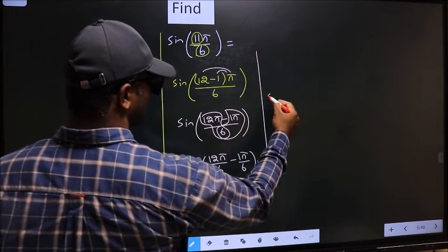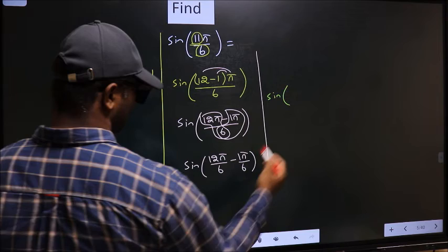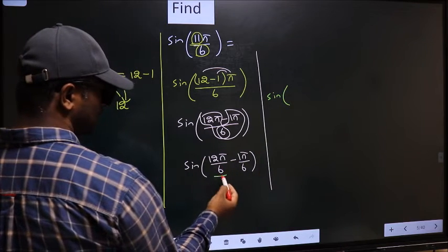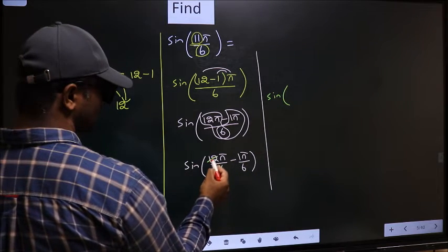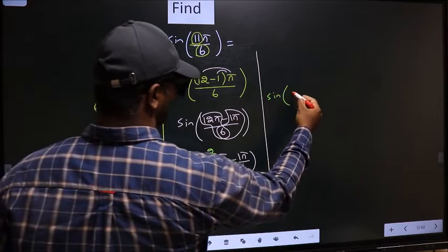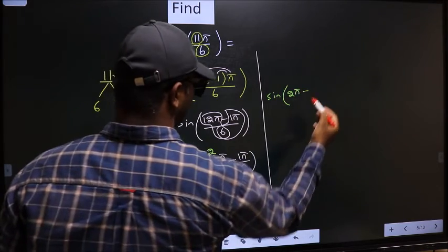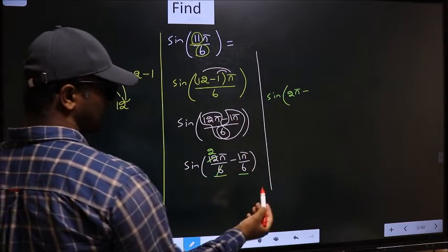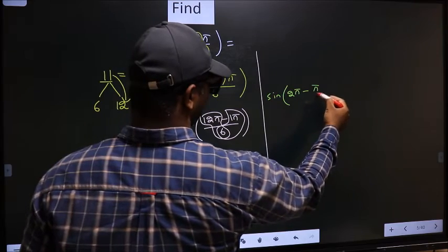Next, sine of. Now 12π by 6 you cancel. 6 ones, 6 twos. So we get 2π minus this angle as it is, π by 6.